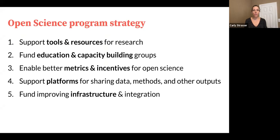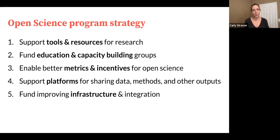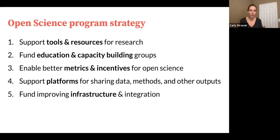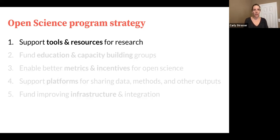To accomplish that mission, we have five main areas that we focus on. The first is support for tools and resources for research. The second is funding education and capacity building groups to enable open science best practices. We also focus on metrics and incentives for open science, and we support platforms for sharing data, methods, and other outputs — most recognizably preprints. And finally, we fund improving infrastructure and integration to enable better open science. I'm going to focus on that first item: support for tools and research resources.